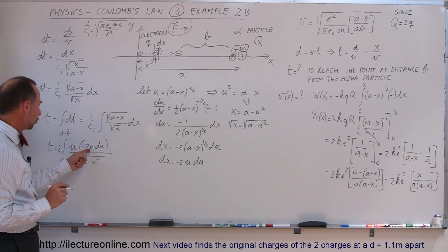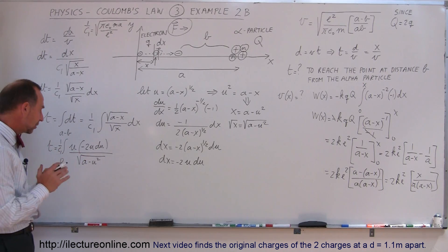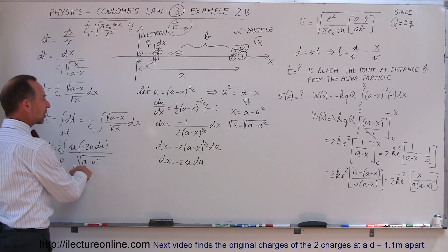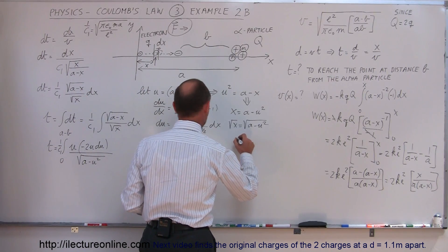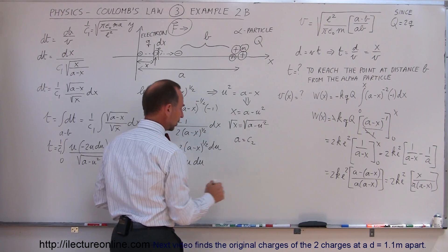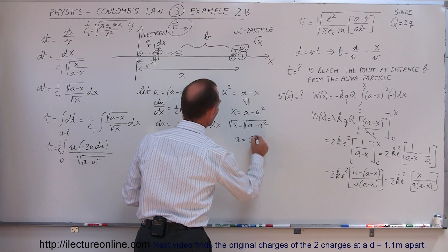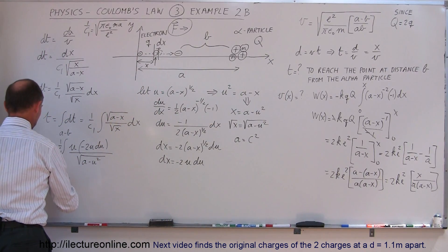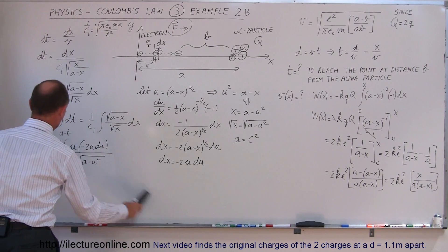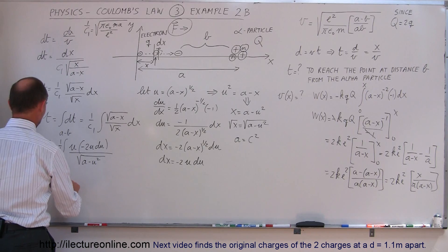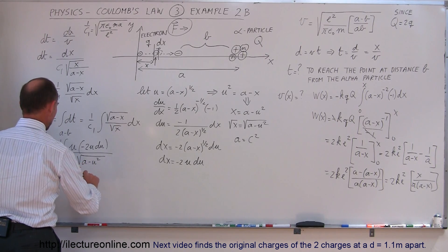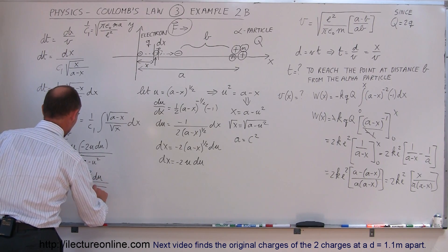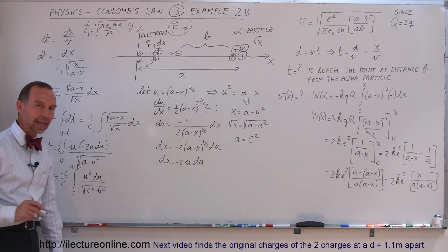Taking the minus 2 out, we have u² du divided by the square root of (a minus u²). That almost looks like an integral I can look up in an integral table. But I don't like the single constant a here — I'm going to make one more substitution: let a equal c squared. So we have the time equals minus 2 over c1 times the integral from 0 to (a minus b) of u² du divided by the square root of (c² minus u²). That is an integral we can find easily in any integral table.